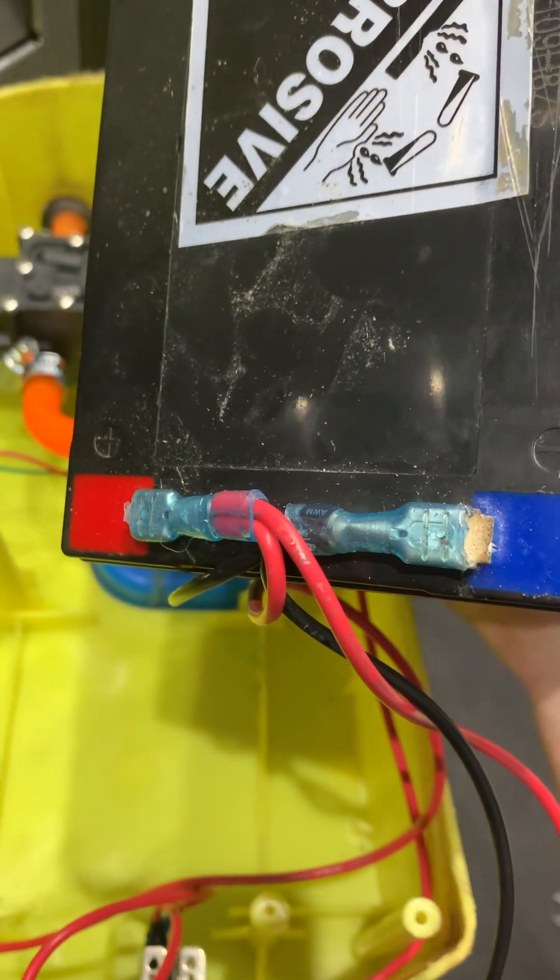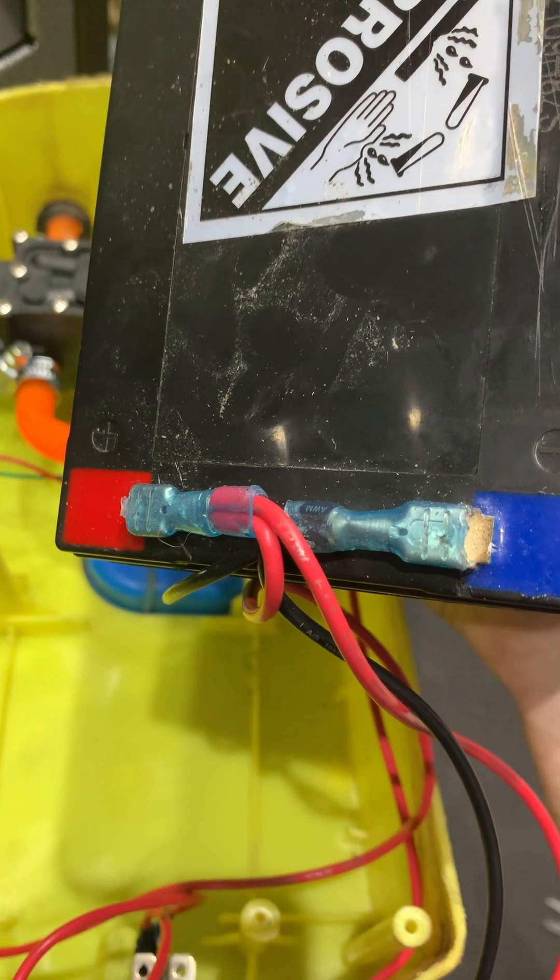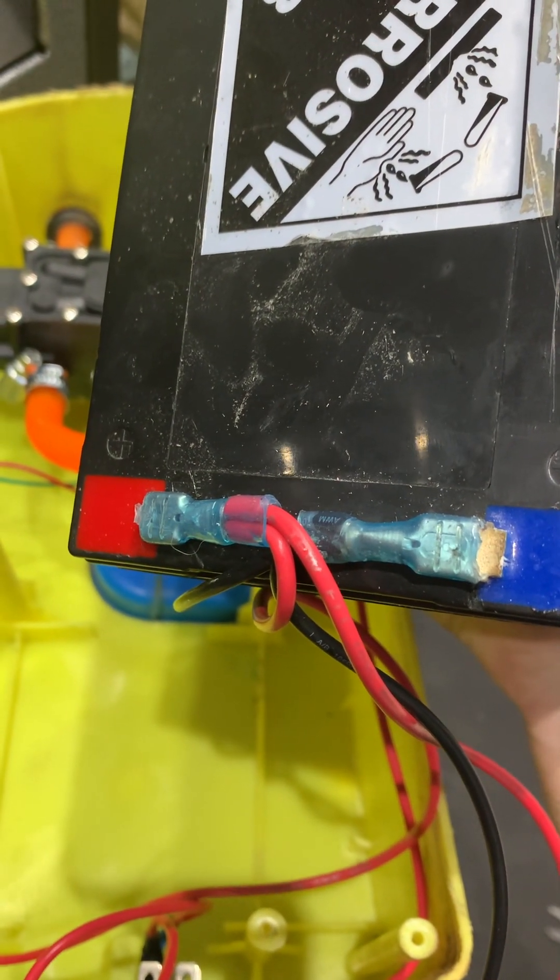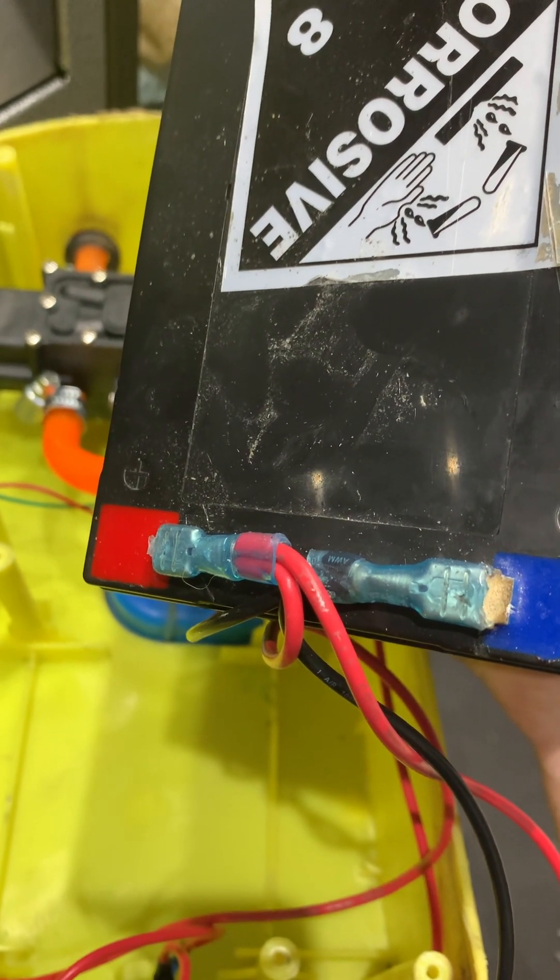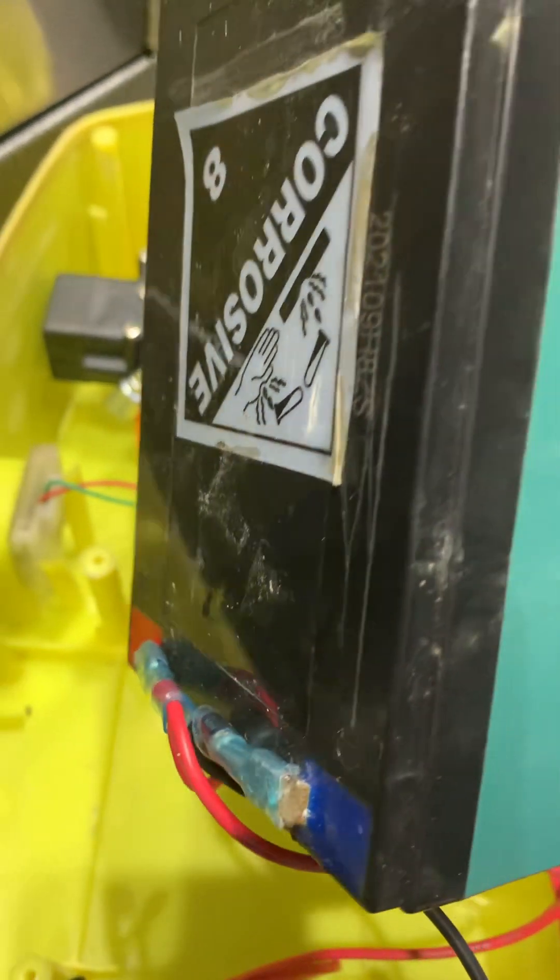The female spade connectors have actually got heat shrink wrap already on them, so I crimped them on and then I heated them up with a soldering iron and melted the heat shrink wrap over the terminals. And yeah, it's a hell of a lot thicker now.